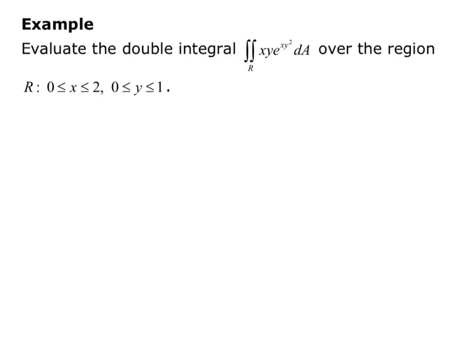Our example: evaluate the double integral over the region R of xy·e^(xy²) dA, where x goes from 0 to 2 and y goes from 0 to 1. We'll set up both ways — with respect to x first and with respect to y first — then discuss which gives an easier integration. With x first, we get the integral from 0 to 1 of the integral from 0 to 2 of xy·e^(xy²) dx dy.